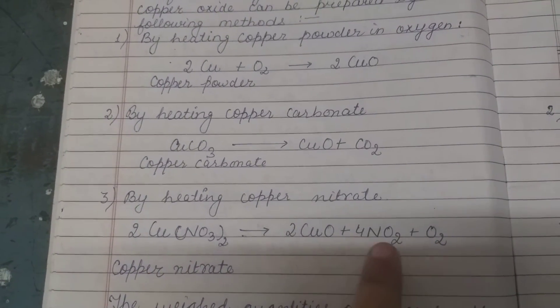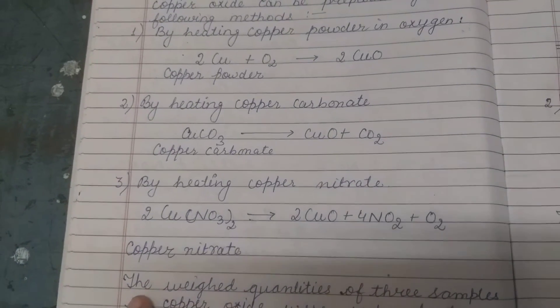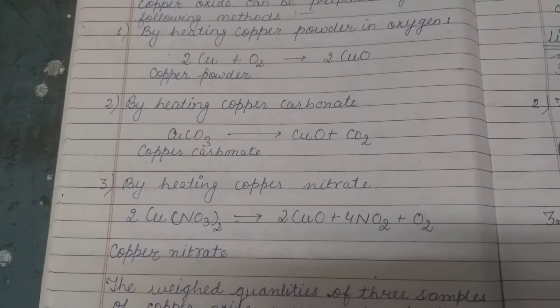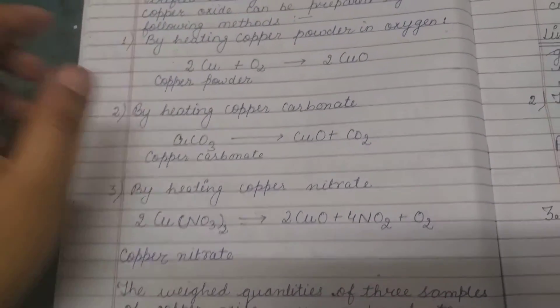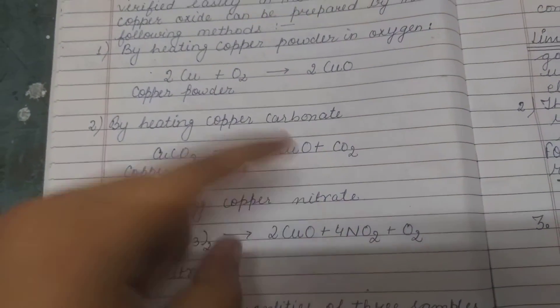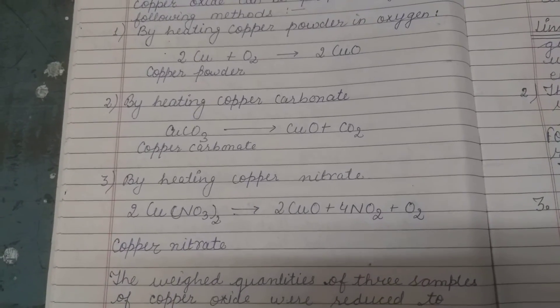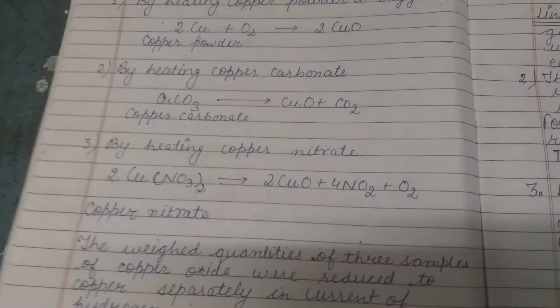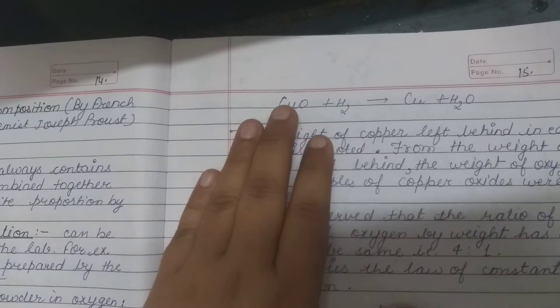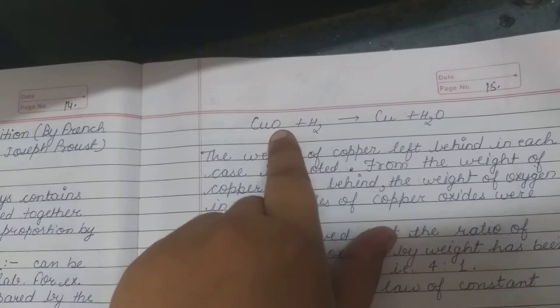Equal weight quantities of three samples of copper oxide were reduced to copper by passing hydrogen gas. When hydrogen is passed through heated copper oxide, the oxygen is removed as water, leaving behind pure copper.